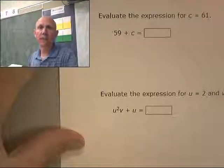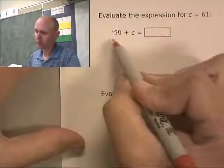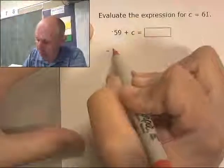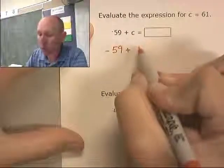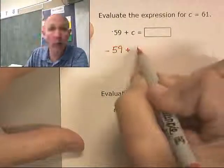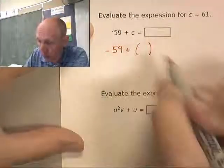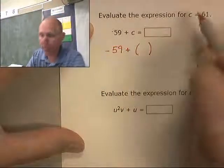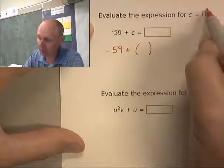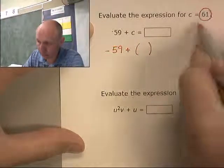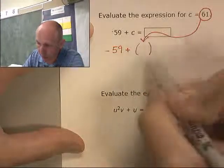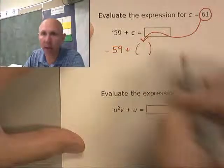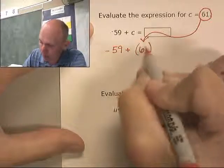All right, I'm going to evaluate the expression. Negative 59 plus c, but c is going to turn into a number. Remember, I'm going to get rid of the c and I'm going to put parentheses where it once was. Now I'm going to take the number 61 and I'm going to put it right there in the parentheses. Remember, I love my parentheses. 61.